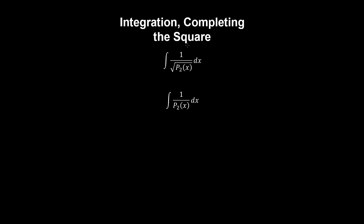We can also complete the square to simplify integrals by rearranging them into their equivalent forms. The main two types of integrals we'll look at are reciprocals of radicals of quadratic polynomials, or the reciprocals of quadratic polynomials. P2 can be written as follows, and when we complete the square to put these integrals into their equivalent forms, they typically evaluate to known inverse trig functions. We'll see that in several examples.